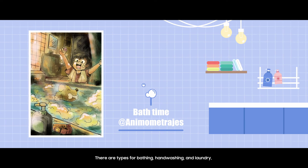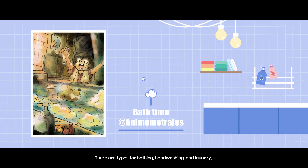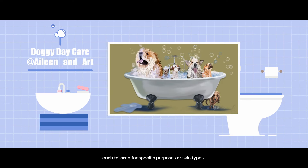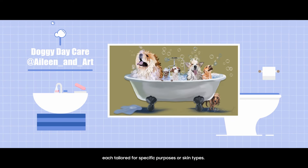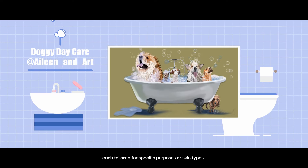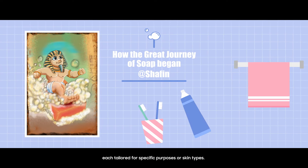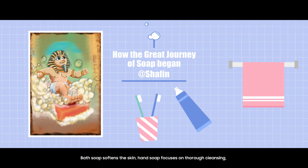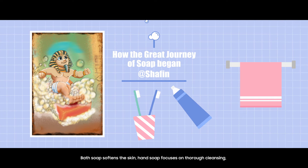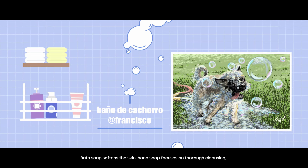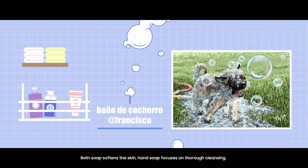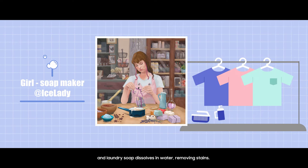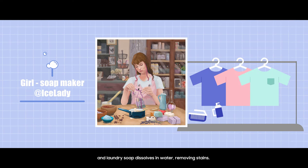There are types for bathing, hand washing, and laundry, each tailored for specific purposes or skin types. Bath soap softens the skin, hand soap focuses on thorough cleansing, and laundry soap dissolves in water, removing stains.